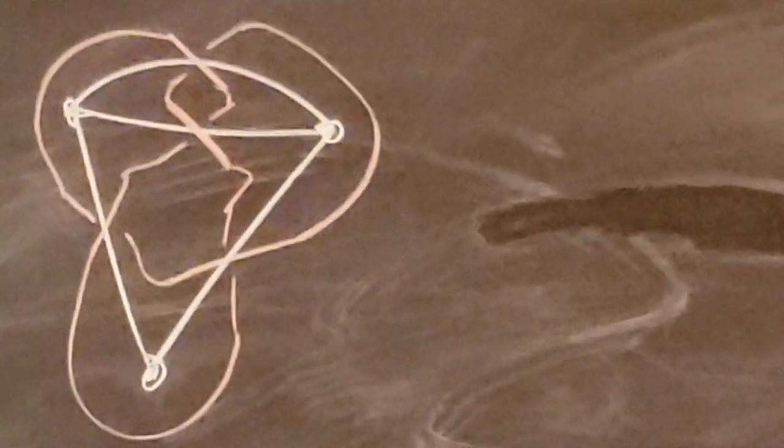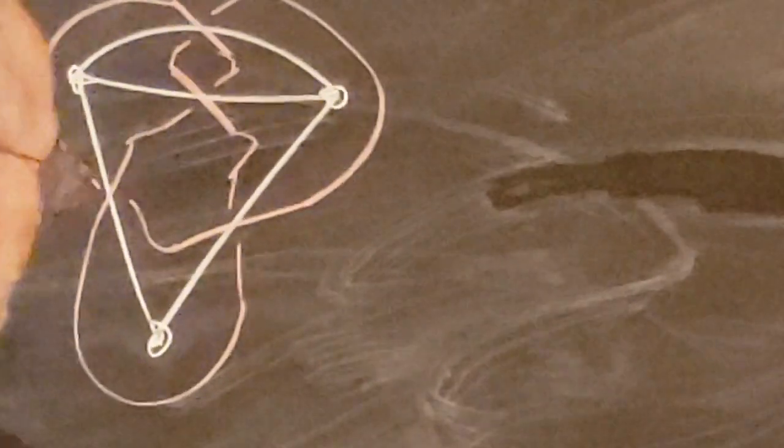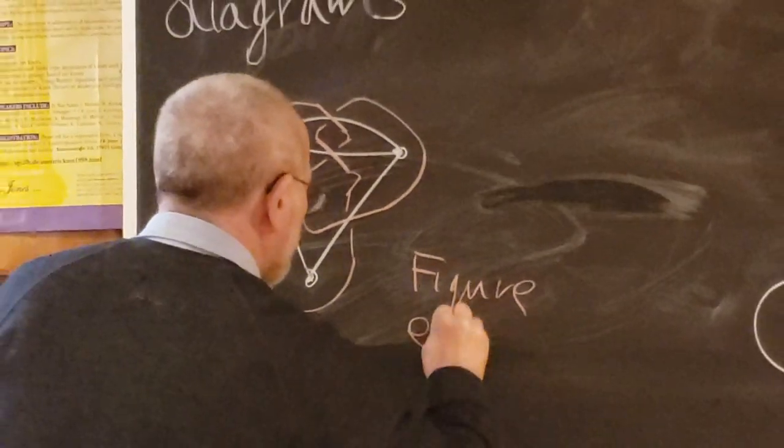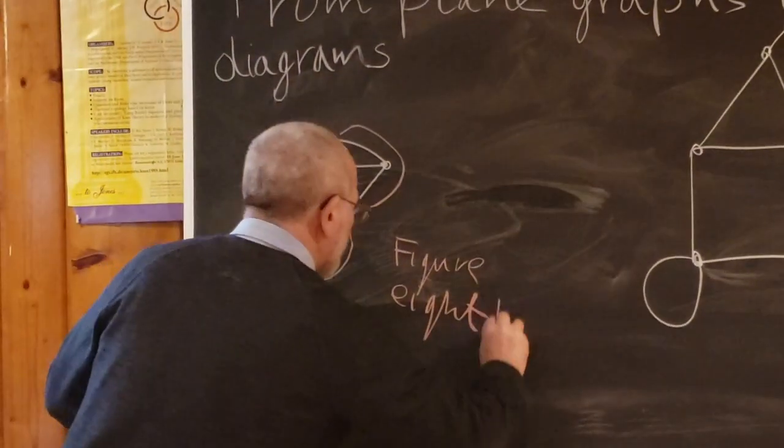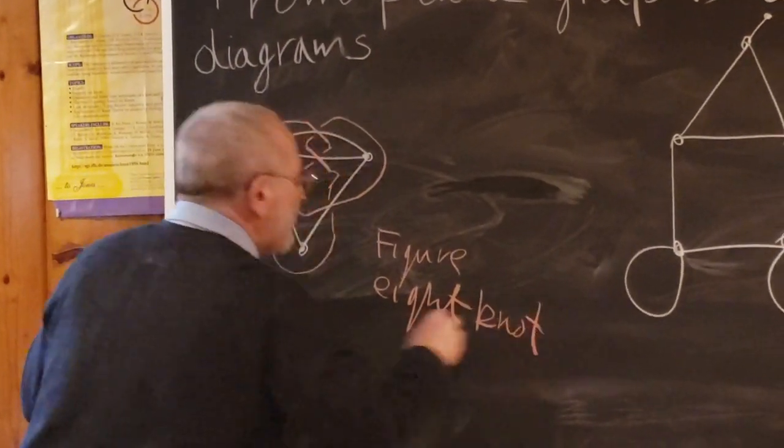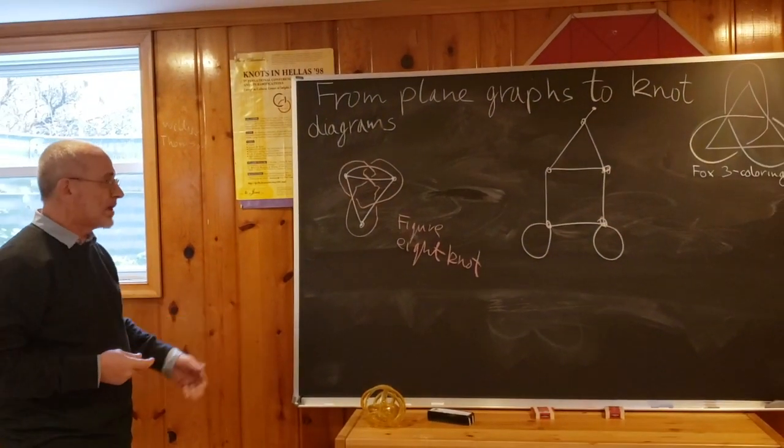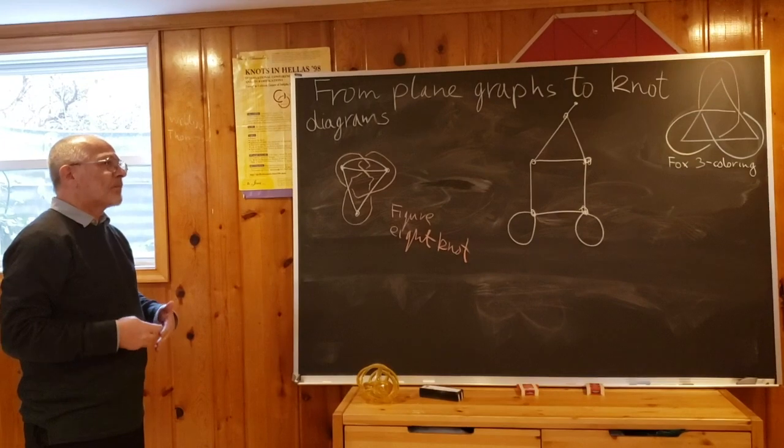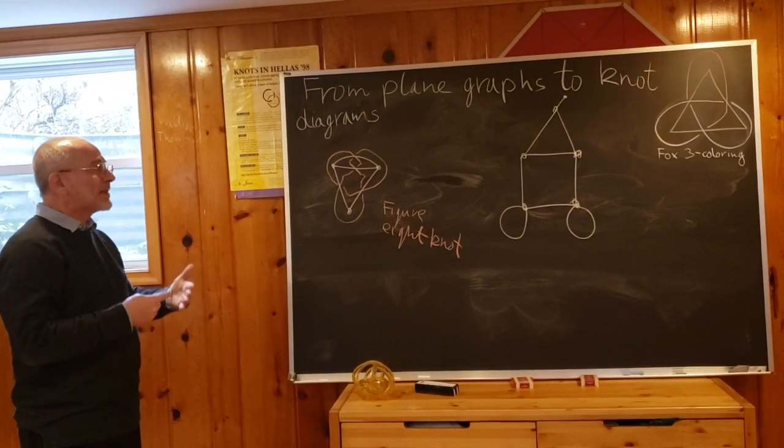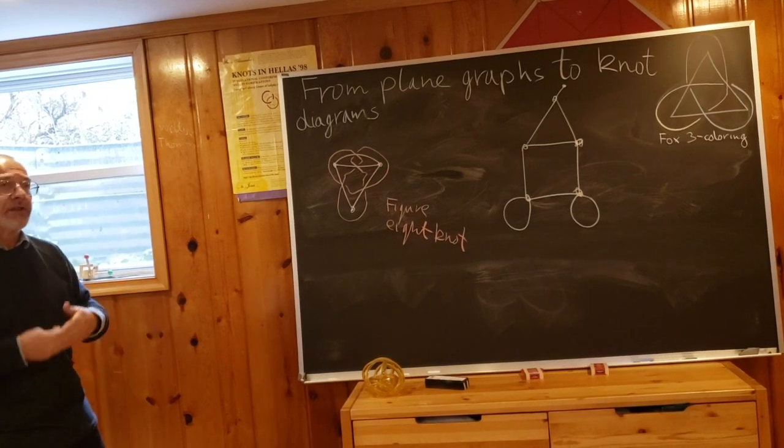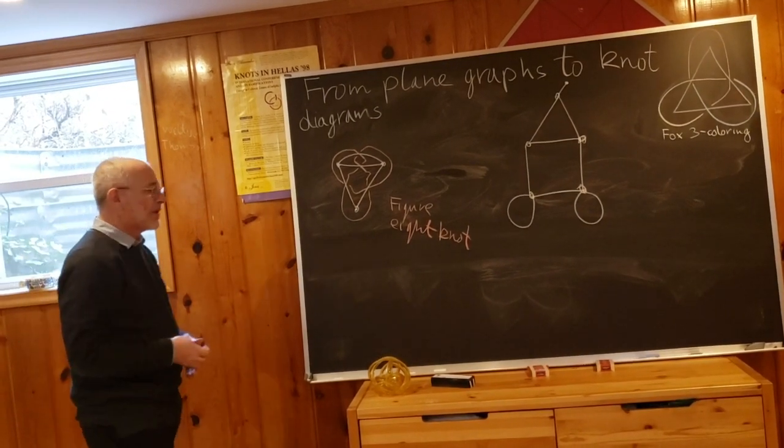What we got is the diagram of a knot, and this knot in fact has a name. It is called the figure-eight knot. Before I will go to explaining how we do this, let's say some history.